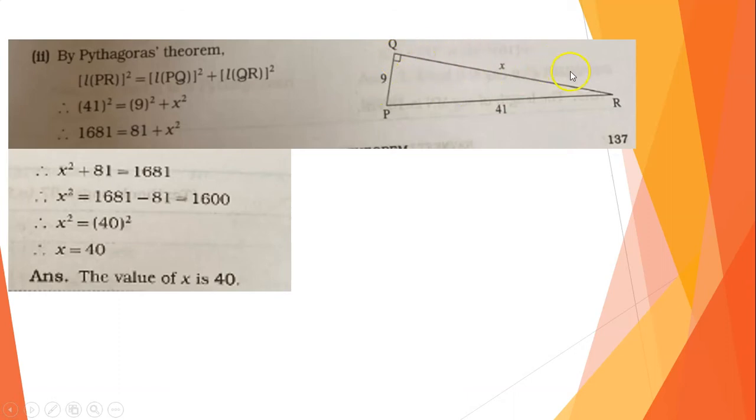Next question. This is the figure with the right angle. The hypotenuse is PR, since the hypotenuse is opposite to the right angle. The base is given and we are asked to find the height. By Pythagoras' Theorem, length PR squared is equal to length PQ squared plus length QR squared. Let's substitute.